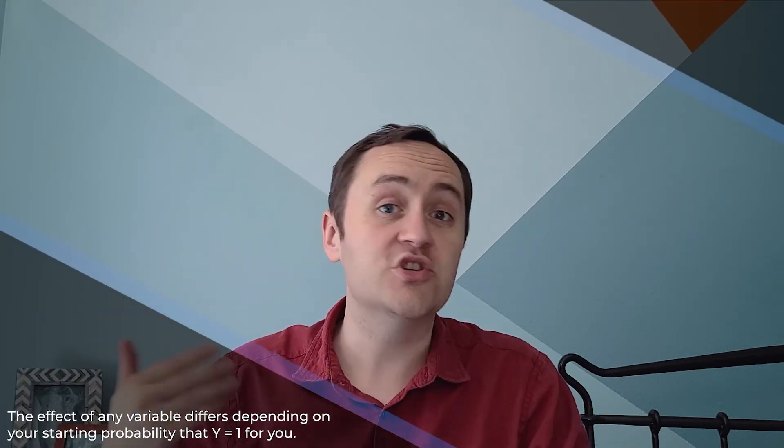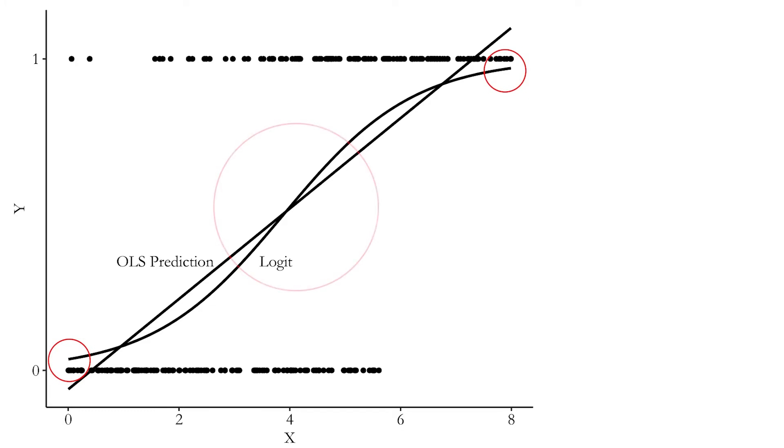Near the middle, when you have a lot of room to move, we should see big effects. Near the edges, when you're already near zero or one, there's simply not much more room to move. The logit model captures this: it flattens out near the edges and is steeper in the middle, just like the intuition suggests. Probit and logit models more accurately describe this relationship than ordinary least squares does.